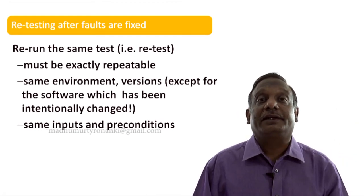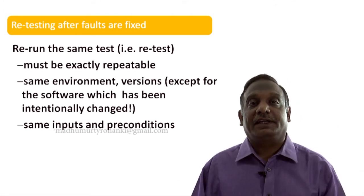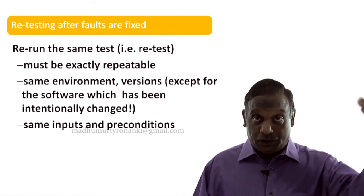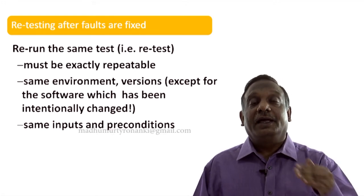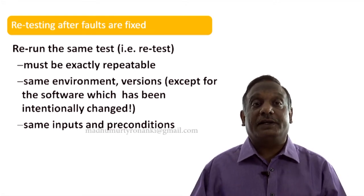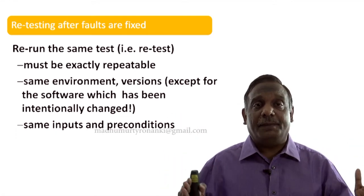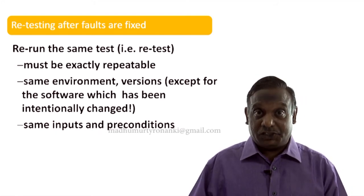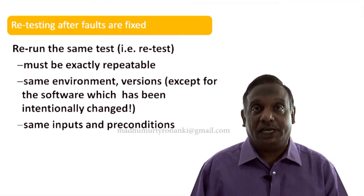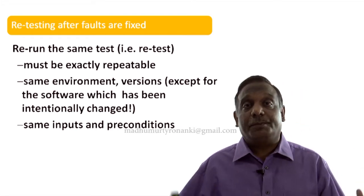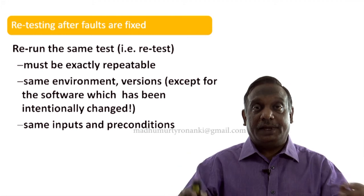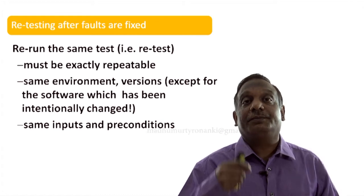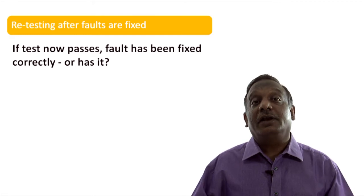For example, let's say you executed 100 tests on the software and the 77th test case failed previously. You reported a bug. Now a new build arrives with that bug fixed. You take out the 77th test case and rerun the same test. When you rerun the same test, you keep everything the same as previously — must be exactly repeatable. Same environment, same versions except for the build that has been intentionally changed by the developer, same inputs, same preconditions. Everything is the same except you are now testing a build that has been fixed. That testing is called retesting.